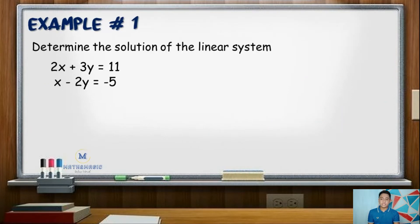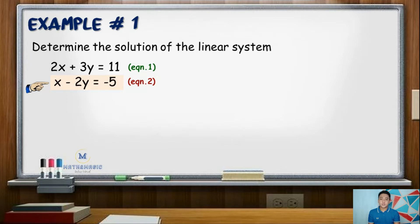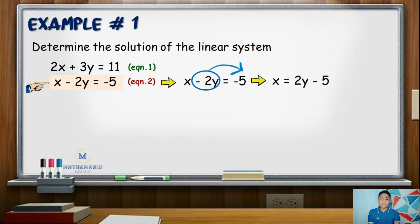Determine the solution of the linear system: 2x plus 3y equals 11, and x minus 2y equals negative 5. We need to look for an equation with a variable whose numerical coefficient is 1. In this example, that is variable x in equation 2. Next, we will rewrite equation 2 in terms of x, transposing negative 2y to the right side so it becomes positive. Equation 2 now becomes x equals 2y minus 5.